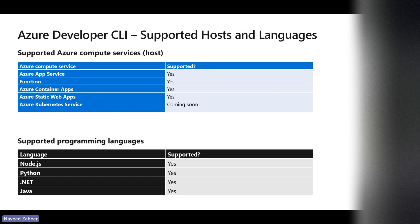The default for infrastructure as code is Bicep. If you are not familiar with it, please search for Azure Bicep — there is a lot of information available, and we have already covered it in a previous Azure Power Lunch session. This is not a session where we go deep into Bicep; it's just an infrastructure-as-code tool. Any questions before we jump into the demo?